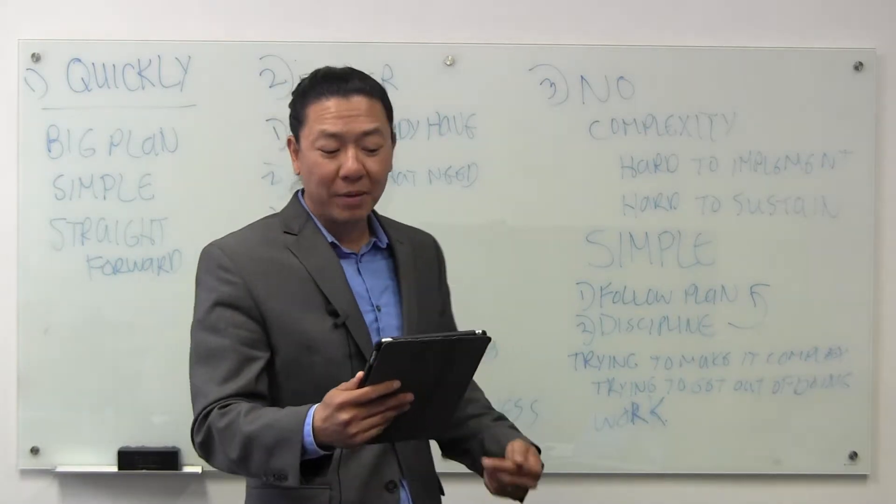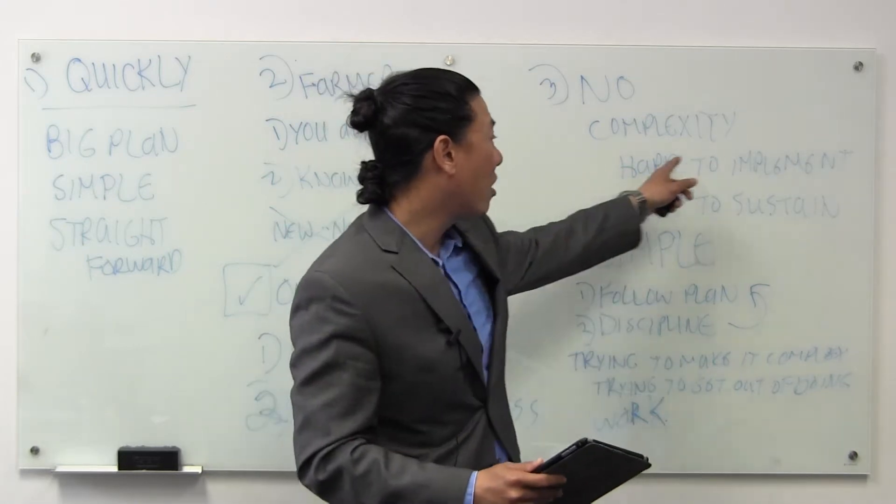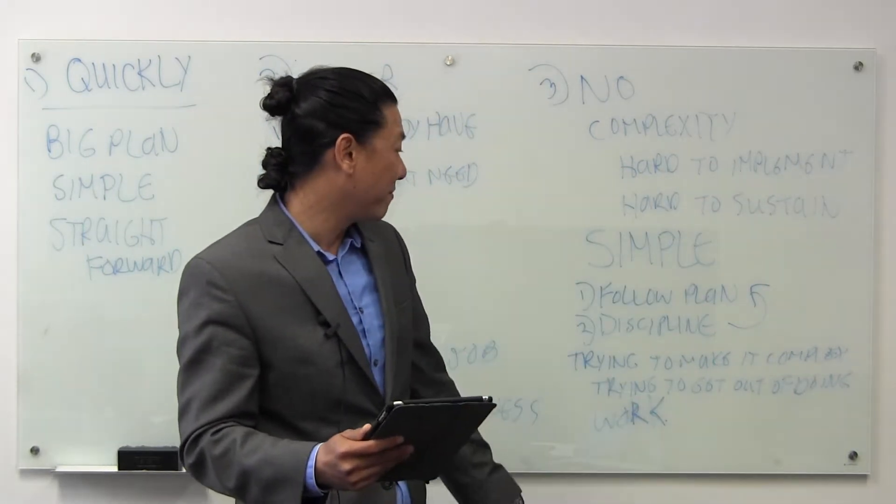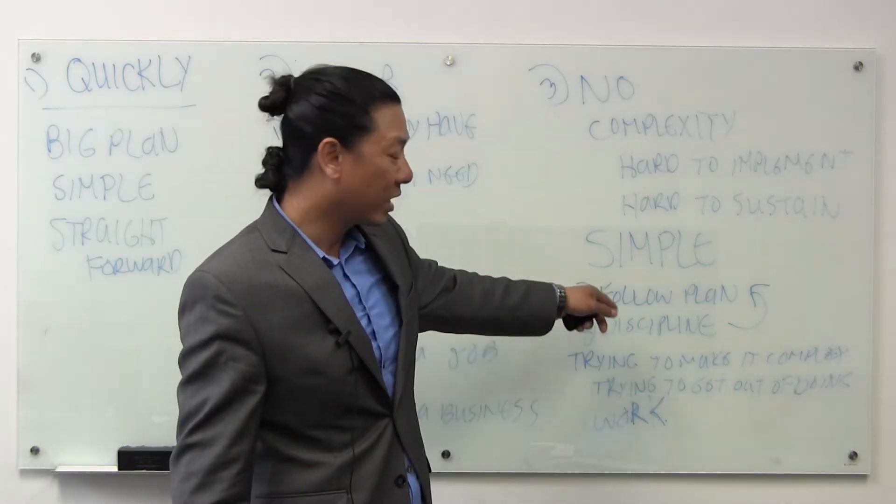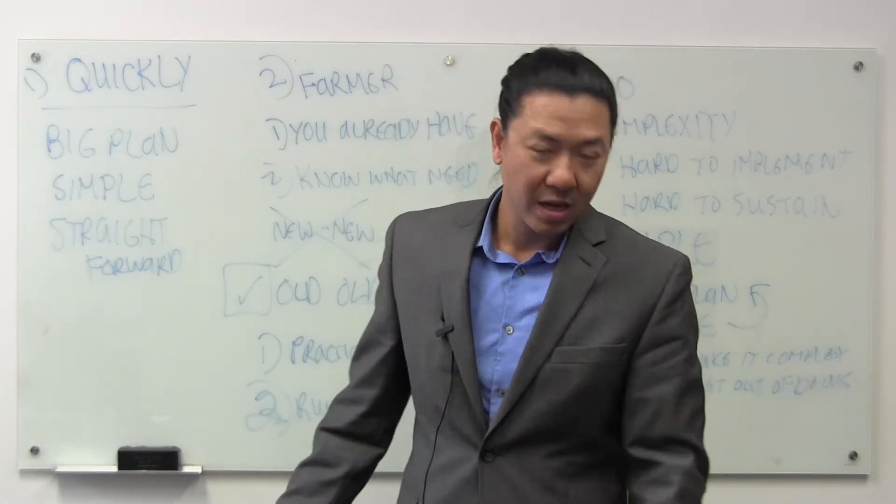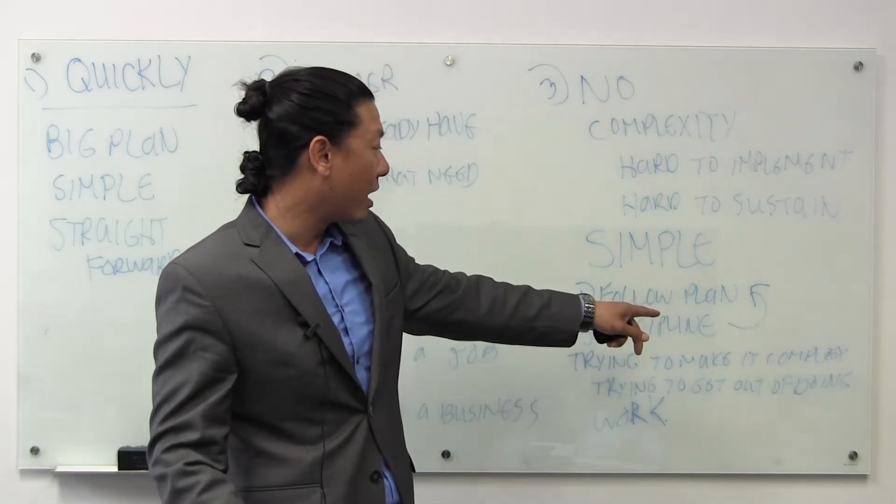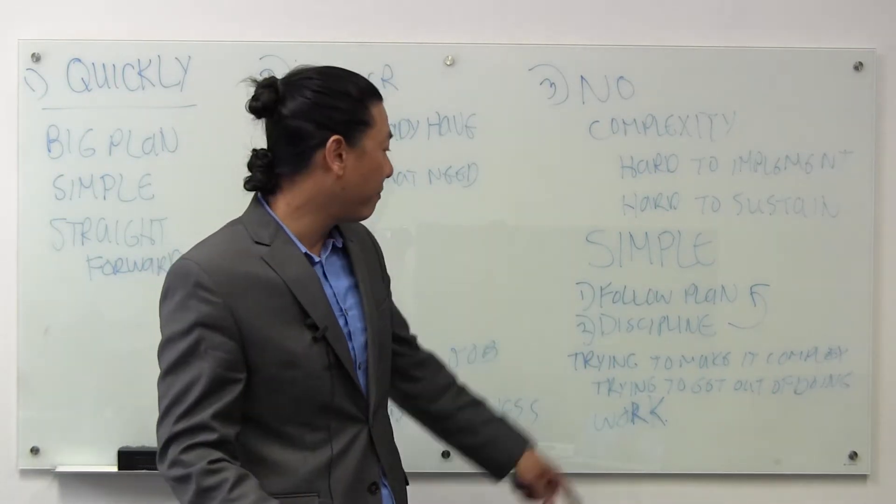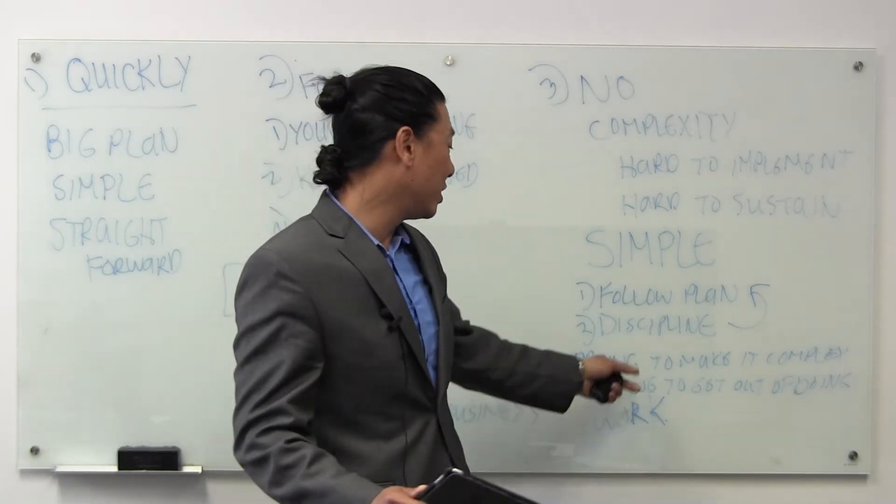So the problem is complex plans are just that: complex, which makes them hard to implement. It's hard to implement and it's hard to sustain. So simplicity—basically create a plan which we're going to go over. Follow the plan and have the discipline to keep doing what you need to do.